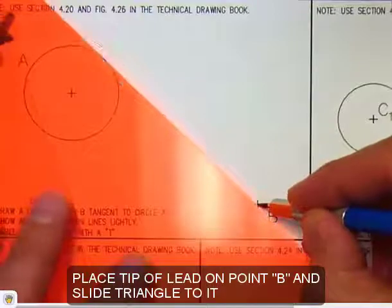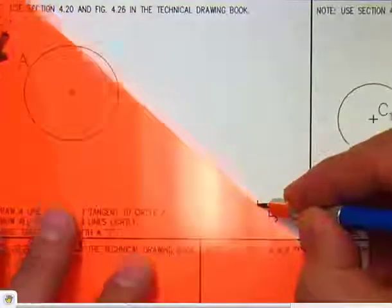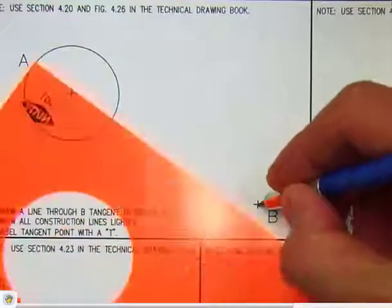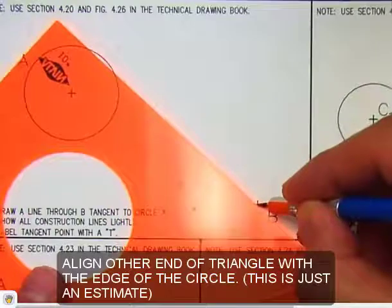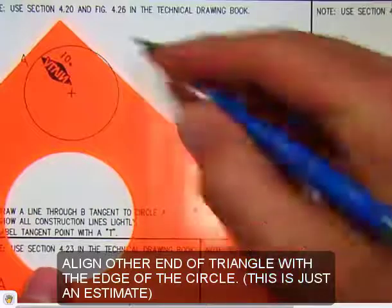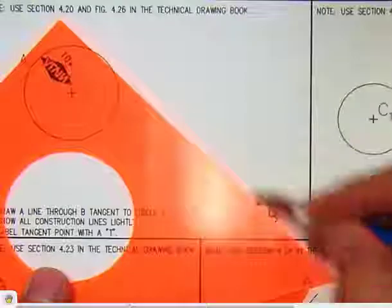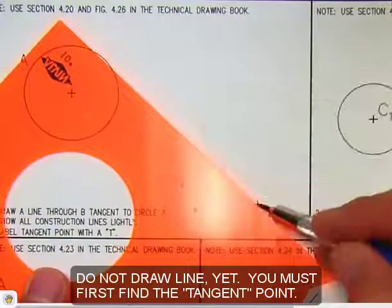Now place the tip of the lead on point B and slide the triangle up to it. Make sure that the 90 degree angle is up and line up the edge of the arc, but don't draw yet.